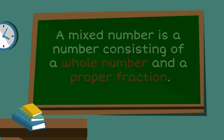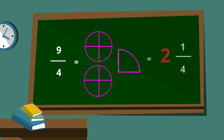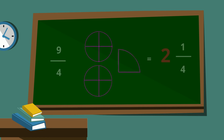For example, 9 quarters means 2 wholes of 4 quarters and 1 part of a whole, or 1 quarter. If a mixed number is just the number of wholes plus the remaining part as a fraction, then 9 quarters as a mixed number would look like 2 wholes and 1 quarter.